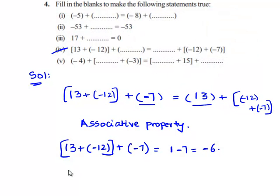Then we will take 13 plus [(-12) + (-7)] grouped together. That gives 13 minus, [(-12) + (-7)] gives minus 19. Therefore, 13 minus 19 gives minus 6.